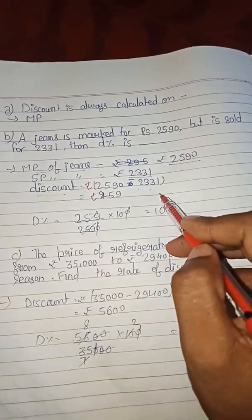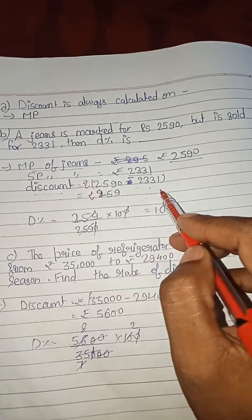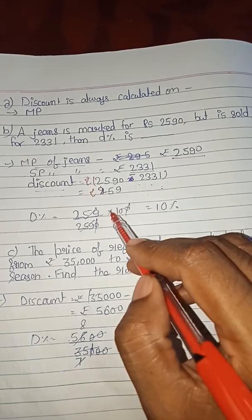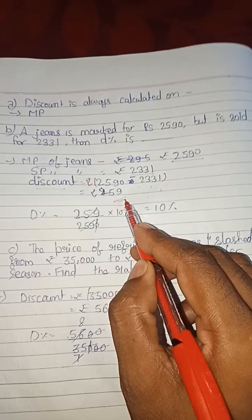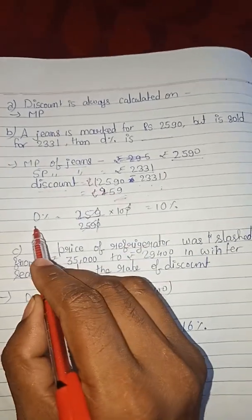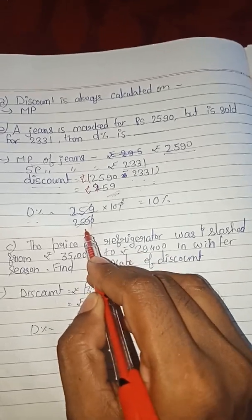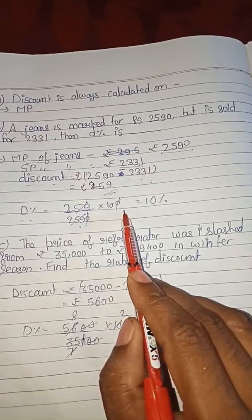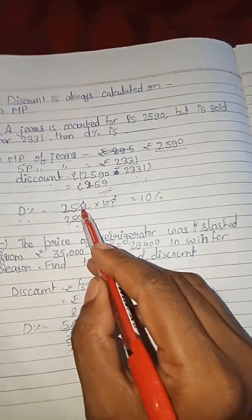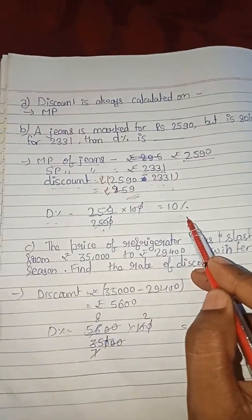Discount, you know that, is MP minus selling price. It is not the standard formula, we just apply discount - what is the before price and what is after discount the price. We will subtract and we can find out that the discount is 259 rupees. And for finding the formula of discount percent: discount divided by previous, means the before value, that is the MP, into 100. 259 into 100 by 2590, that is 10%.